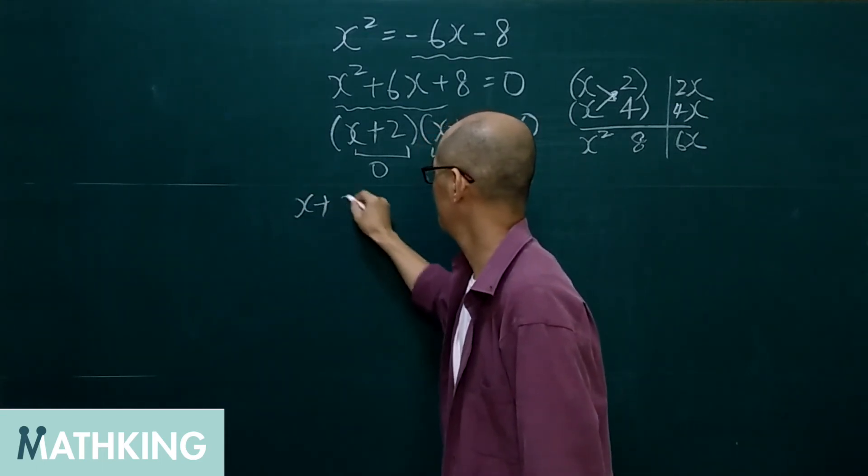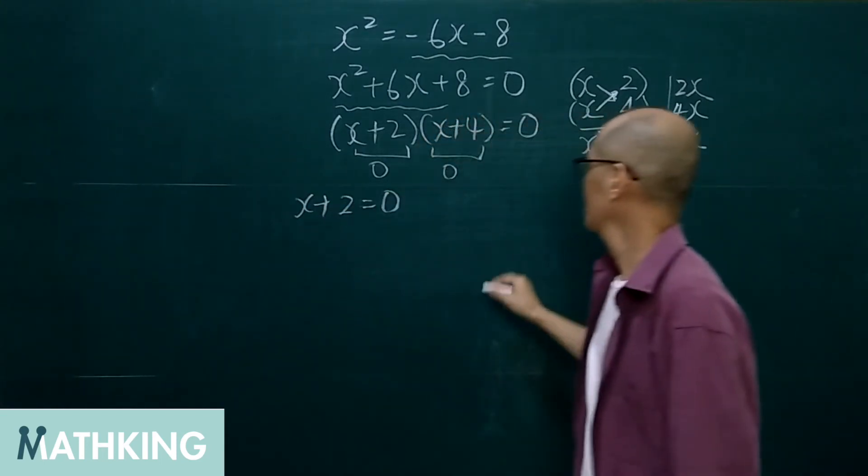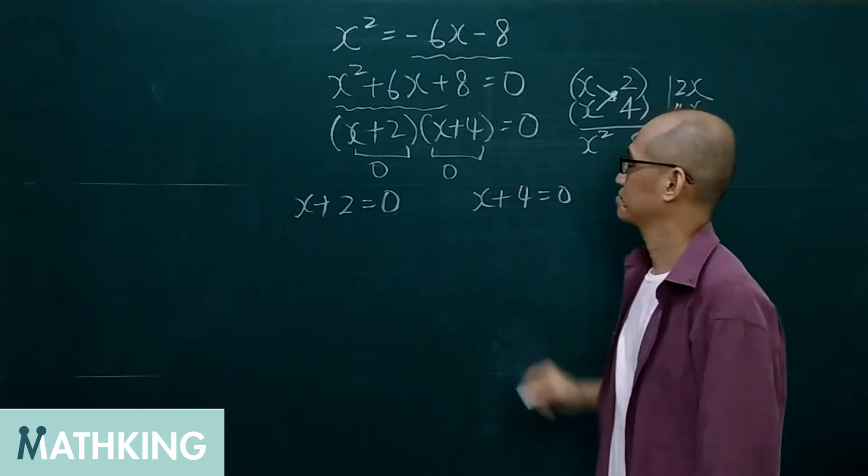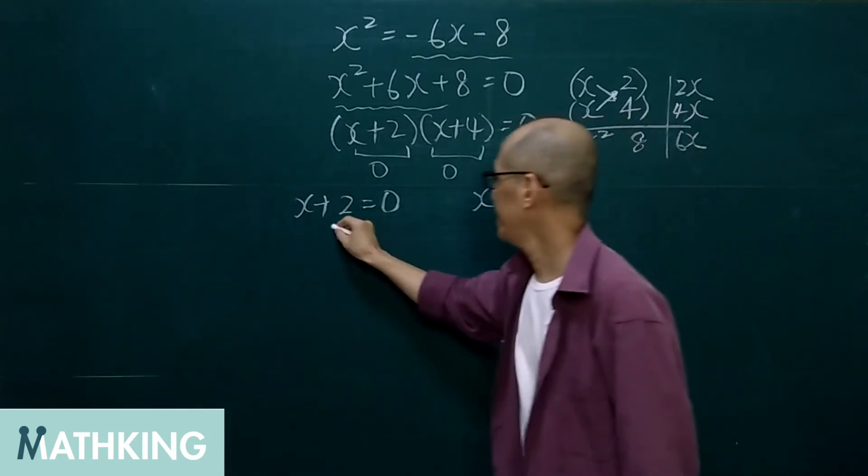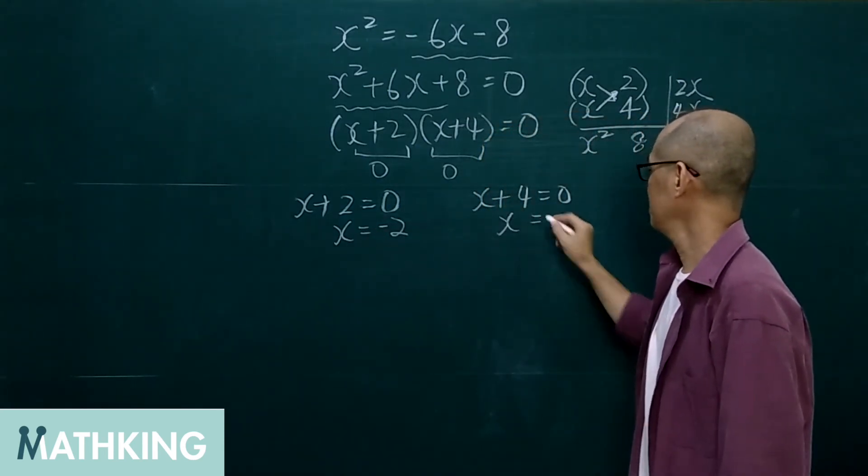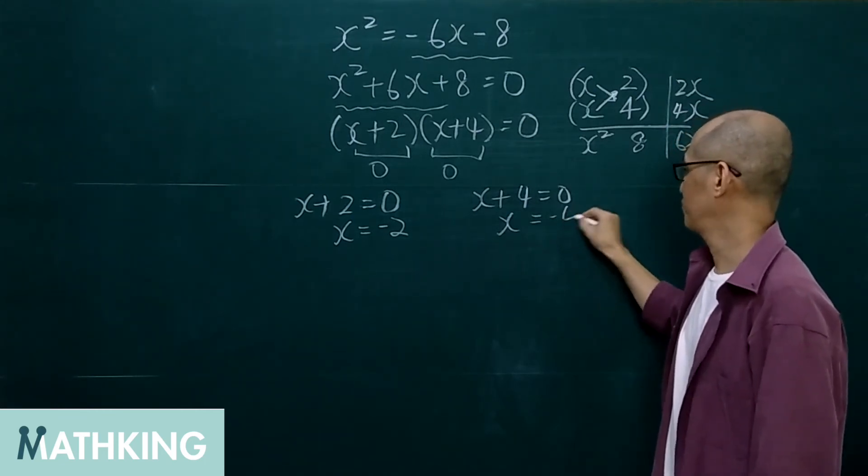So, we have x plus 2 equals 0, x plus 4 equals 0. And we get x equals negative 2, x equals negative 4.